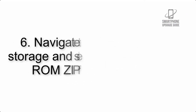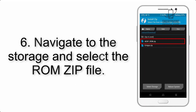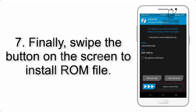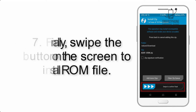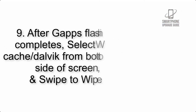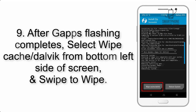Step 6: Navigate to the storage and select the ROM zip file. Step 7: Finally, swipe the button on the screen to install the ROM file. Step 8: Flash the GApps zip package in the same manner.